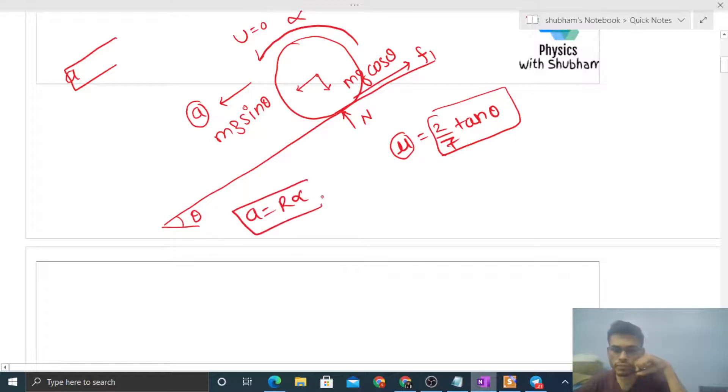Now what happens? Mu's value goes from 2/7 to 1/7 of tan theta. You can see the friction force that was limiting, which had value n into mu - n is still constant, that is mg cos theta - but mu's value we have halved, it means friction's value became half. Now friction becoming half, what difference will this make?